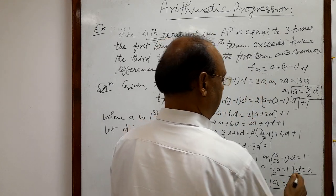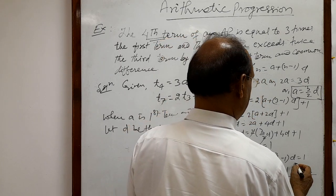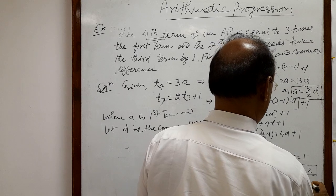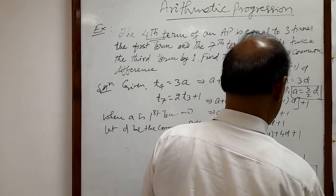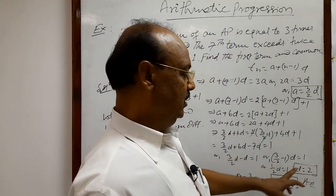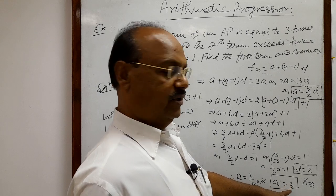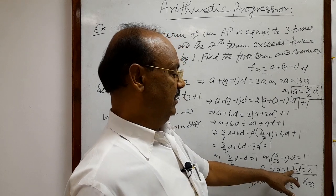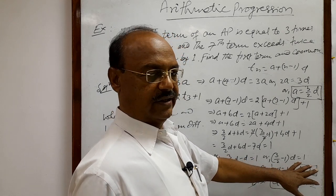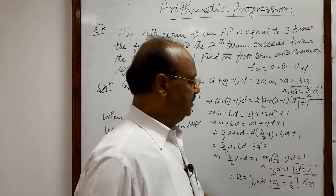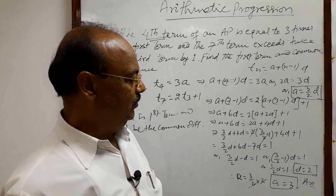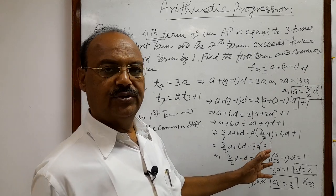So a = 3 and d = 2. We were required to find the first term and common difference. The first term is 3 and the common difference is 2. This is the answer — a very simple and interesting question. Hope you have understood it.